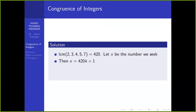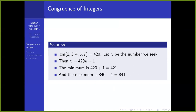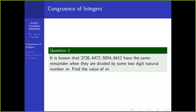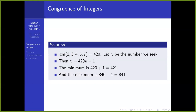The LCM is 420, and the number we seek must be of the form 420K plus 1, so that when you divide by any of these numbers, the remainder will be 1. You can get all such numbers by varying K. When K is 1, you have 421. When K is 2, you get 841. If K is 3, you go beyond three-digit numbers. So the minimum is 421 and the maximum is 841.